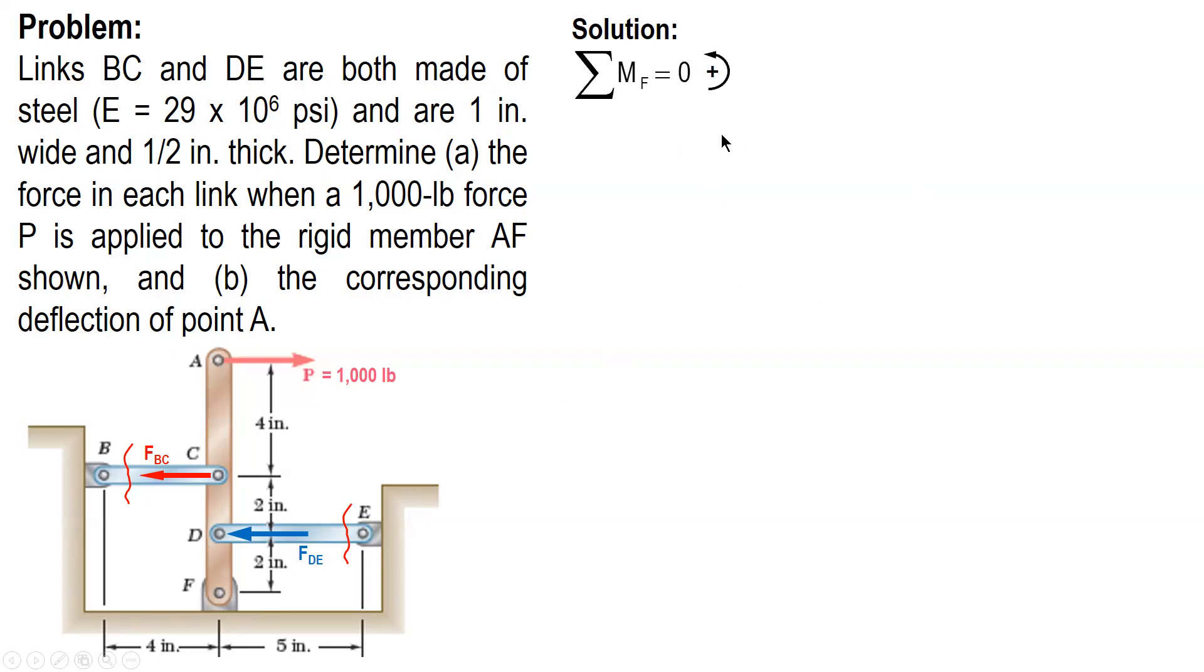Let's sum up moment about F. The moment of FBC and FDE are both counterclockwise. The moment of P is clockwise. Sign convention here is positive counterclockwise. So we have this equation: FBC times 4 plus FDE times 2 minus 1000 times 8. This will be our equation 1. For equilibrium conditions, we only have one equation but we have two unknowns, so we need an additional equation.